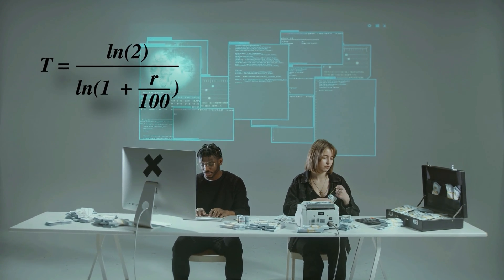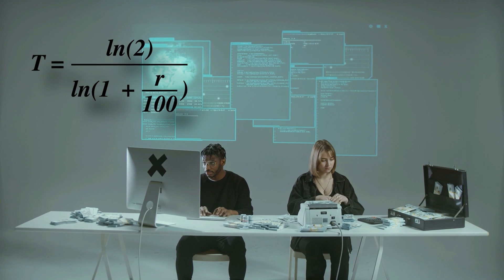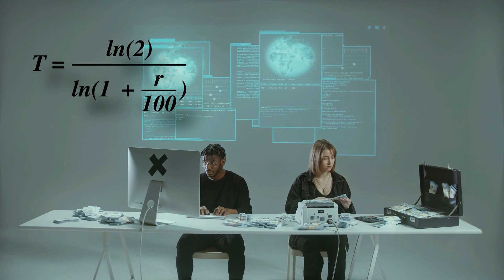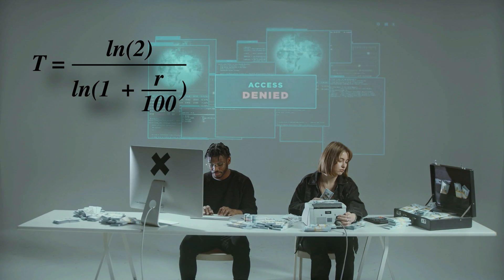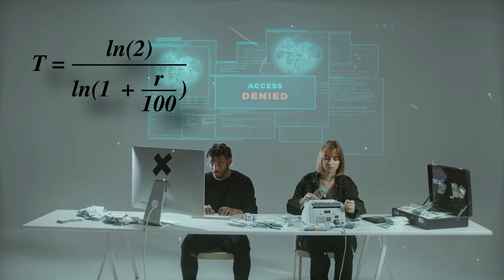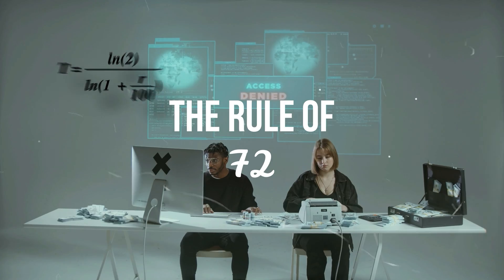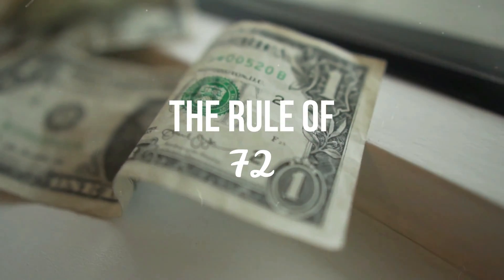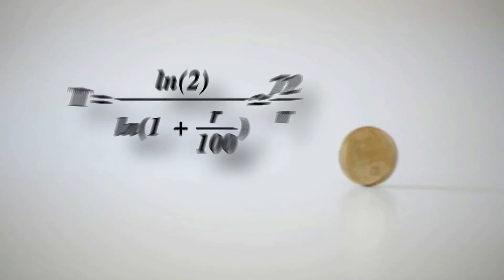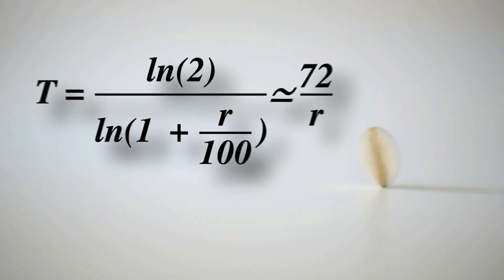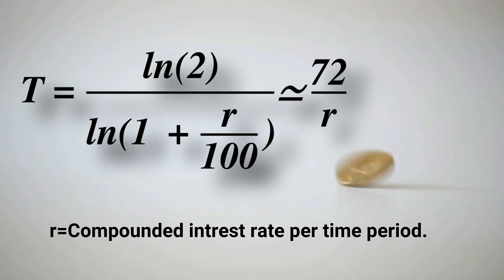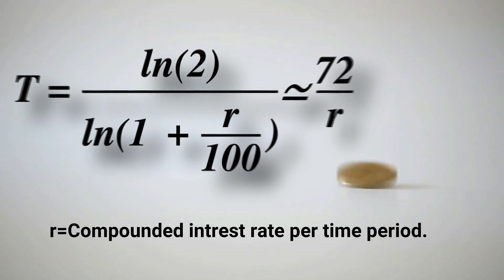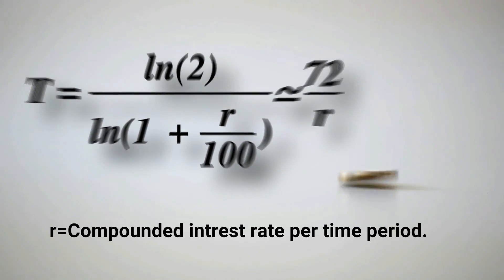That formula is: time period T equals the natural log of 2 divided by the natural log of (1 plus r divided by 100). The answer you get from solving this equation is approximately equal to 72 divided by r, where r is the rate of interest in a given time period. Remember, we are dealing with compound interest.